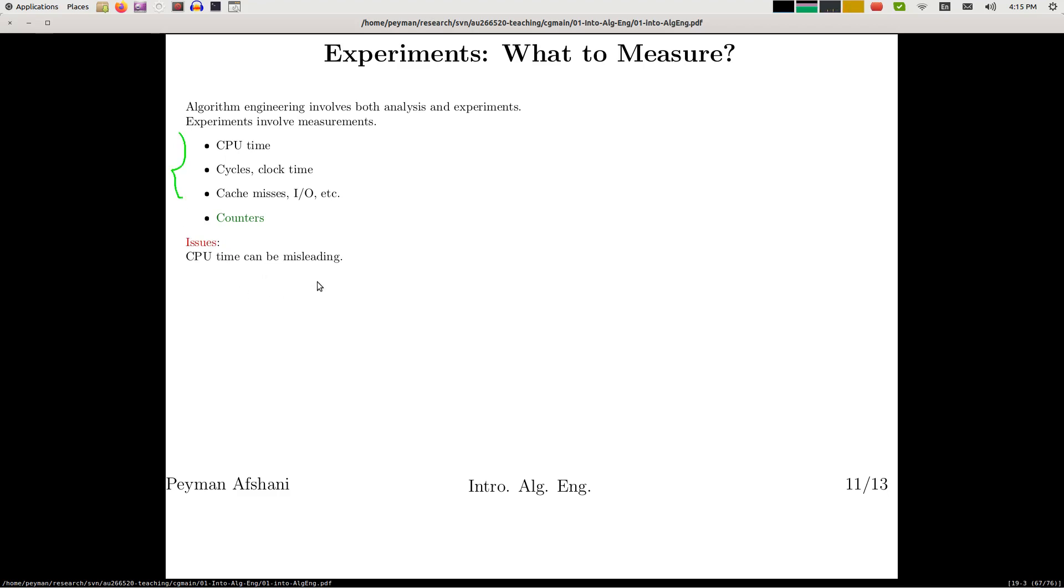For example, CPU time can be a bit misleading. All of these things are machine dependent. Operating system and other factors can change them. For example, if you're measuring the running time of your algorithm and you're running another application in the background, then you're not sure how much CPU time your program is actually getting. So your measurement could be a little bit off.